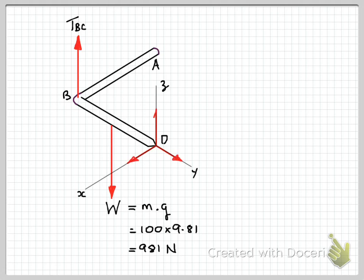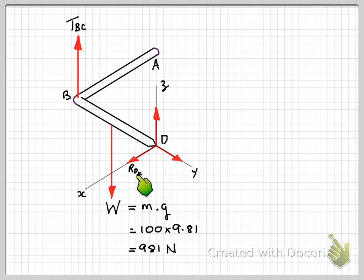Once we've drawn the arrow heads for the forces at D, we assume a sense for each force and label the unknowns. The reaction force in the X direction is labelled R subscript DX, then similarly for the Y and Z directions. I prefer using capital R or F followed by the point and direction, rather than just the point subscript used in some textbooks.